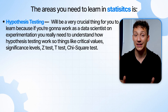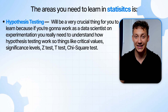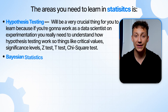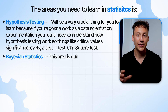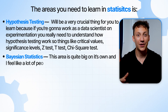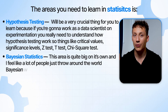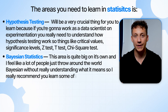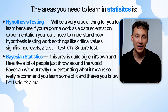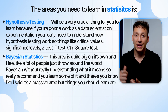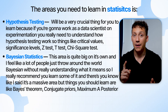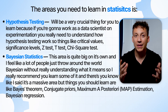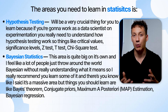If you're doing any form of A/B testing, you're doing a hypothesis test, so it's well worth learning it. Finally, the last area you should learn is Bayesian statistics. A lot of people throw around the word Bayesian without really understanding what it means. I really recommend you learn it — things like Bayes' theorem, conjugate priors, MAP, Bayesian regression, and the main fundamentals of Bayesian statistics and how it works.